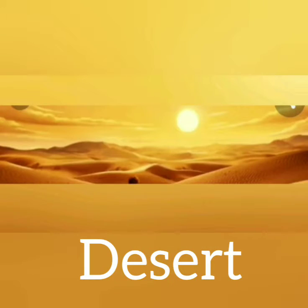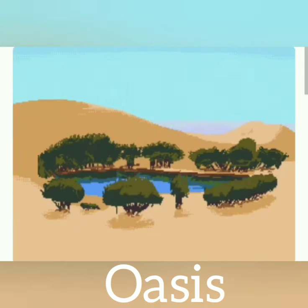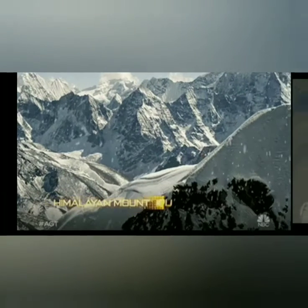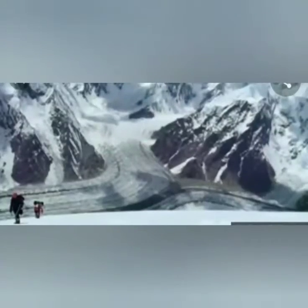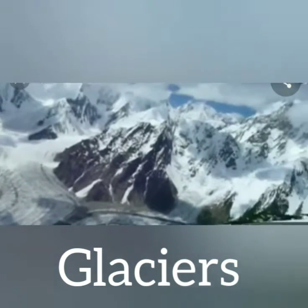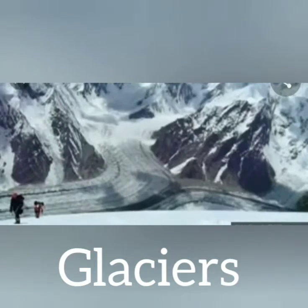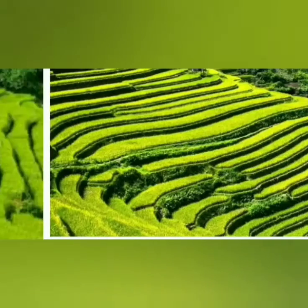This is desert and here we found the different kinds of oasis. Next is glacier. These are found in the Himadri range. Next is terrace farming.